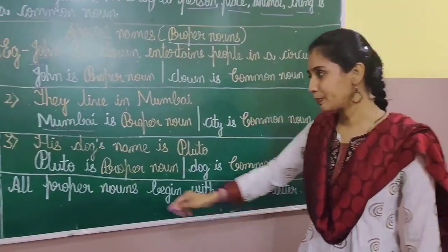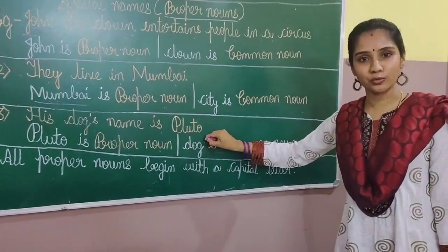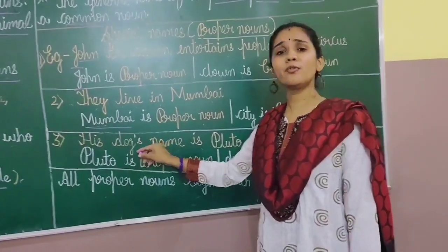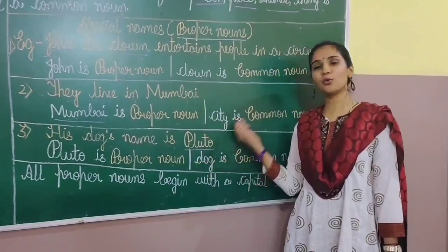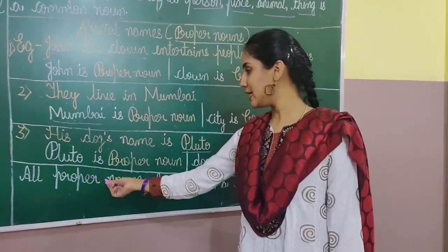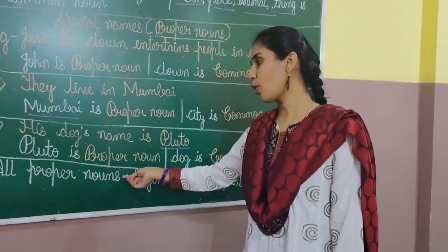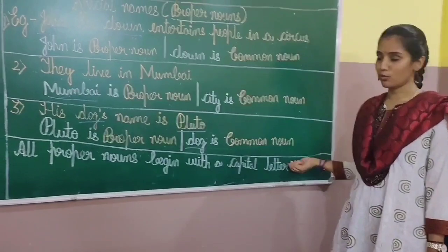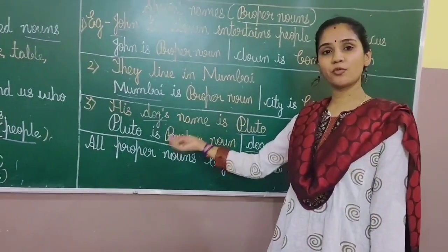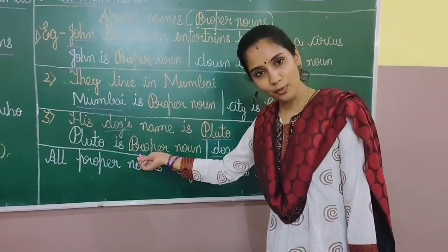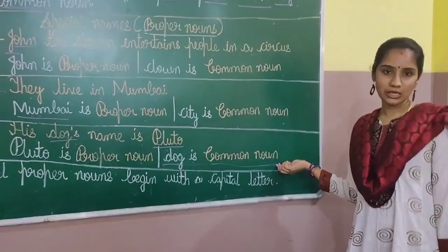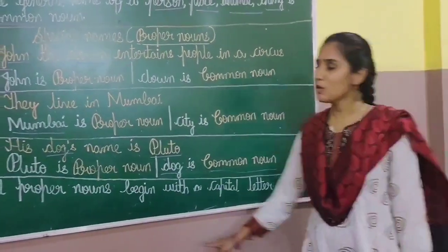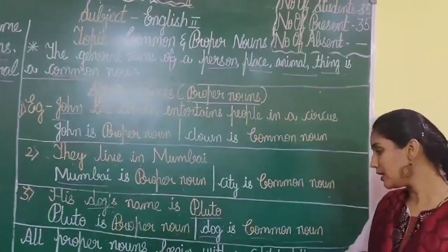Next example: 'His dog's name is Pluto.' What is the name of the dog? Pluto. Pluto is a proper noun. Dog is a common noun. The name of the dog is Pluto, so Pluto is a proper noun. All proper nouns begin with a capital letter.